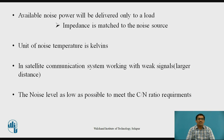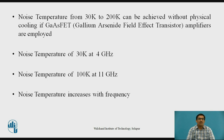In satellite communication, we work with weak signals because satellite communication is used over large distances. The noise level should be as low as possible to meet the C/N ratio requirement. Noise temperatures from 30 Kelvin to 200 Kelvin can be achieved without physical cooling if we use GASFET — gallium arsenide field effect transistor amplifiers. For example, a noise temperature of 30 Kelvin is achieved at 4 GHz, and 100 Kelvin at 11 GHz. As the frequency increases, noise temperature increases — therefore noise temperature increases with frequency.